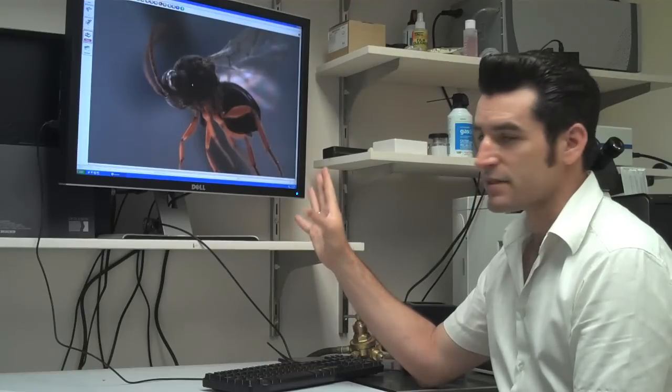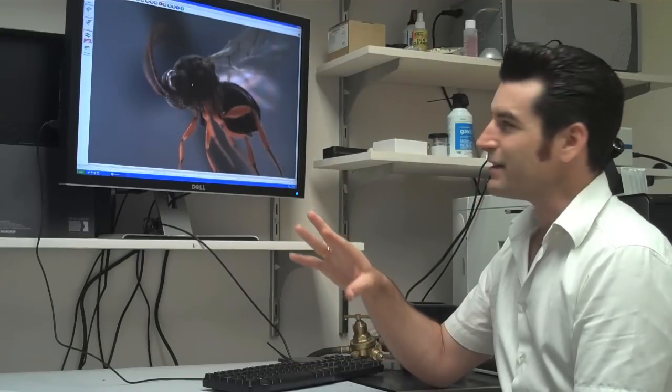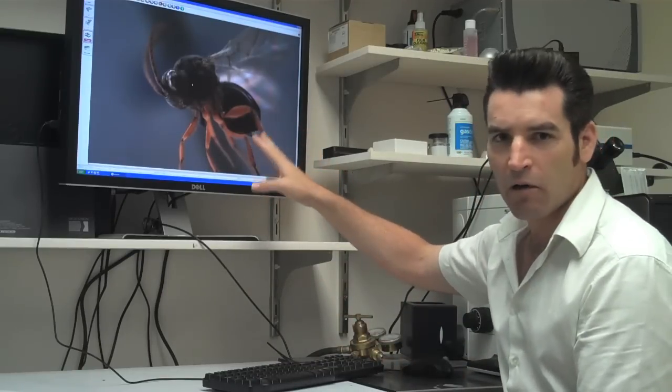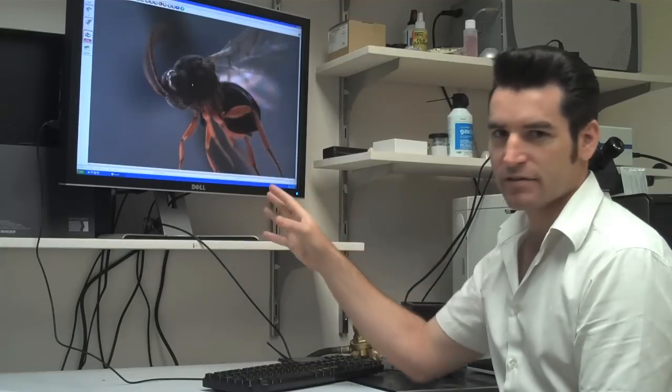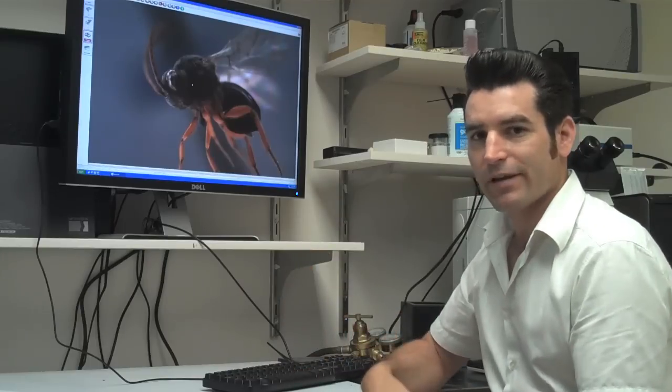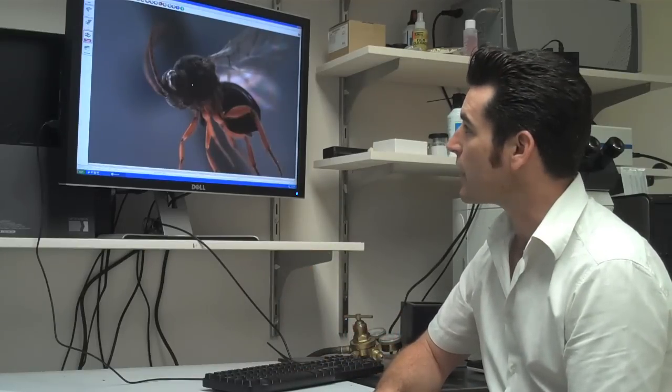For a lot of the species I personally work with, they tend to be this kind of color: dark brown, black, with some orange legs. There's not a lot of spectacular coloration to be actually captured by the camera.